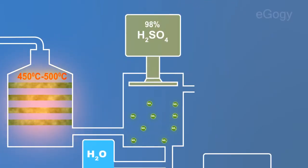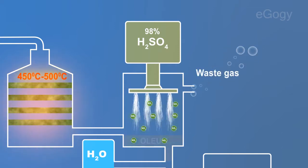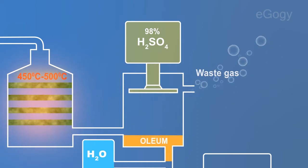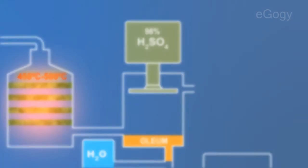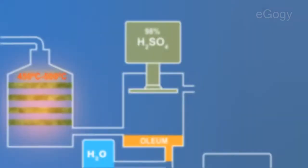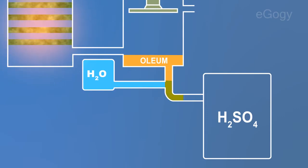Instead, sulfur trioxide is dissolved in 98% sulfuric acid solution to get oleum. SO3 on reaction with H2SO4 forms H2S2O7, that is oleum.